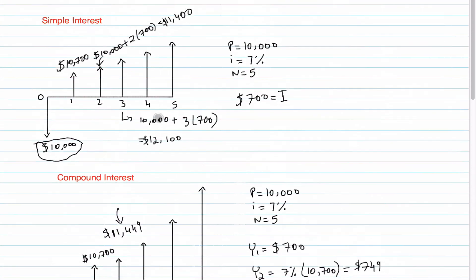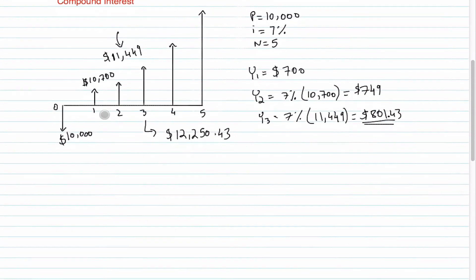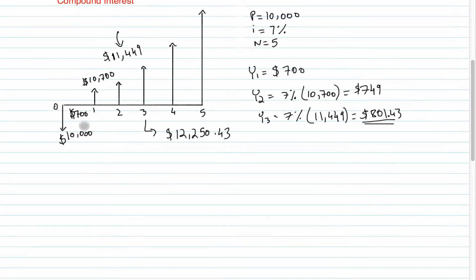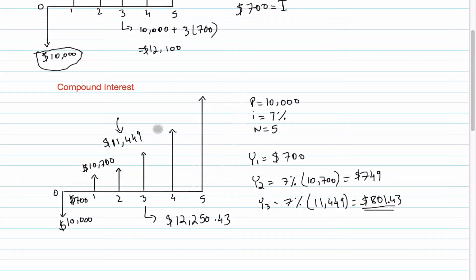As you can see, in year three you make twelve thousand one hundred from simple interest, because seven hundred dollars is the interest earned every period. However, in compound interest you only earn seven hundred dollars in the first period; the second period you earn seven hundred forty-nine, because you take seven percent of ten thousand seven hundred. That's the difference between simple and compound interest — you end up earning a lot more with compound interest, and this is how it works in real life: when you pay your student loans or buy a house, it's always calculated using compound interest.